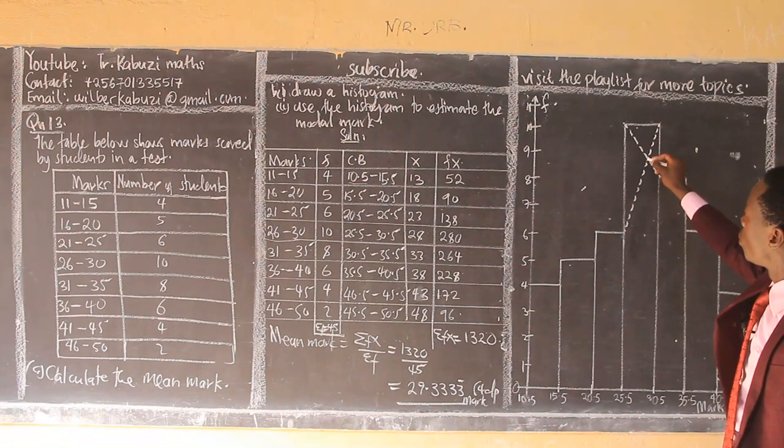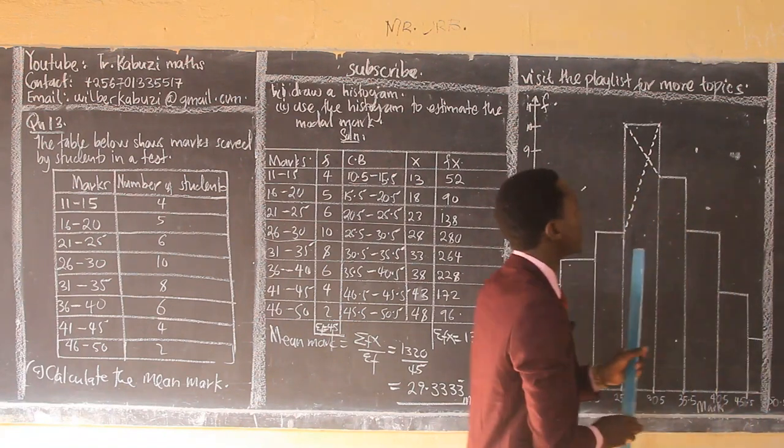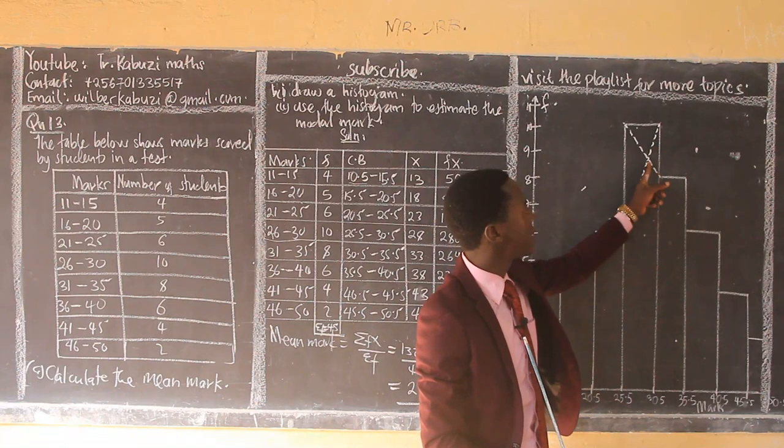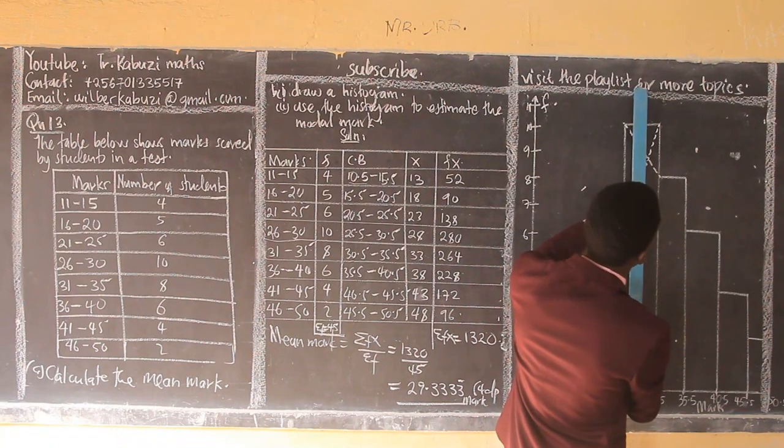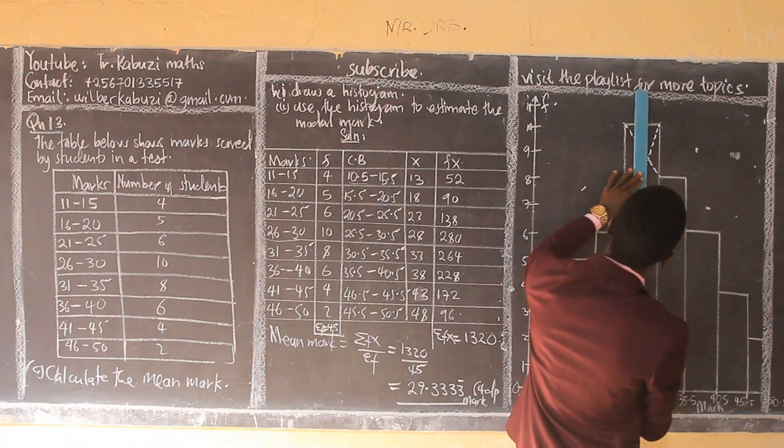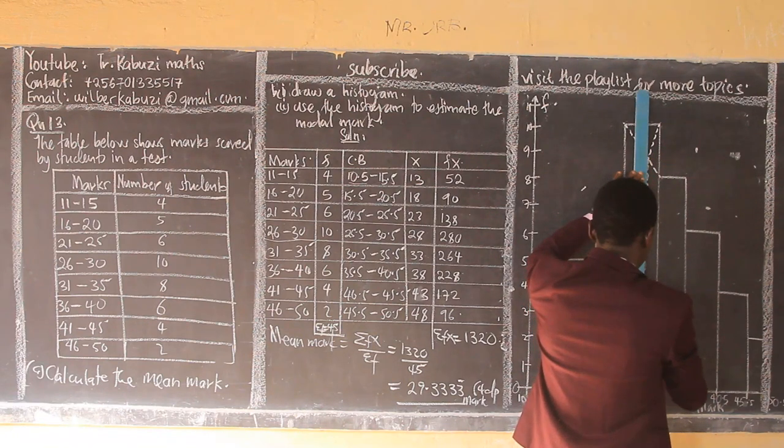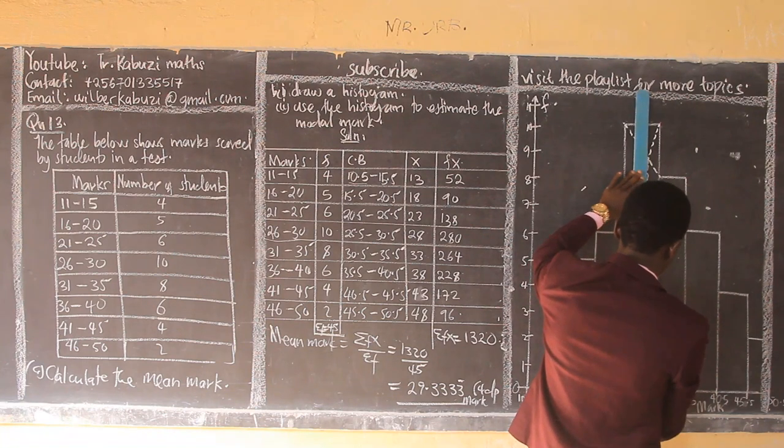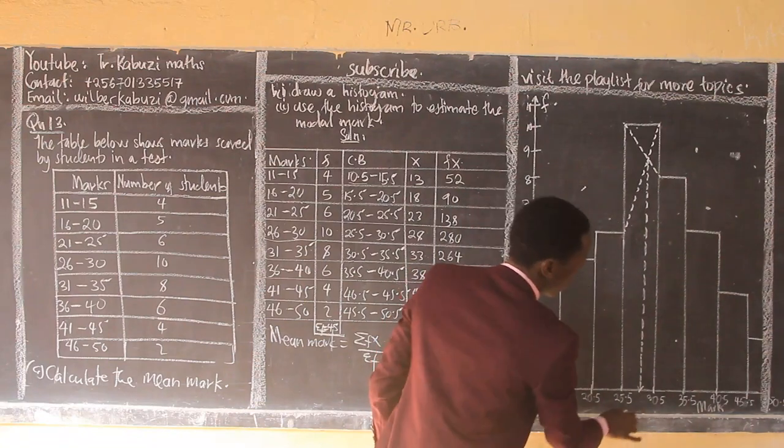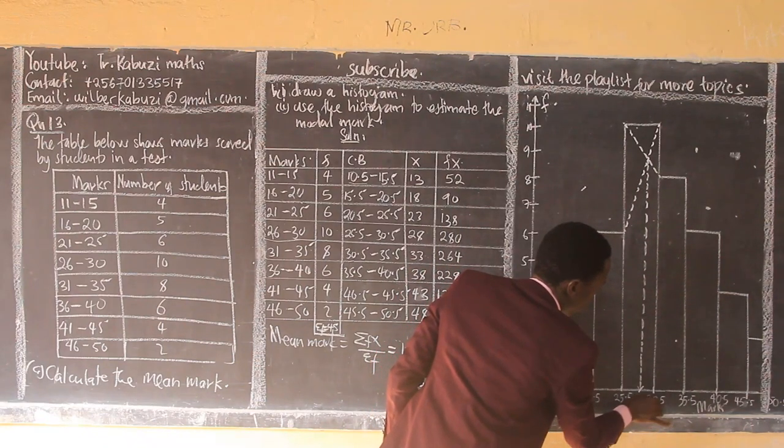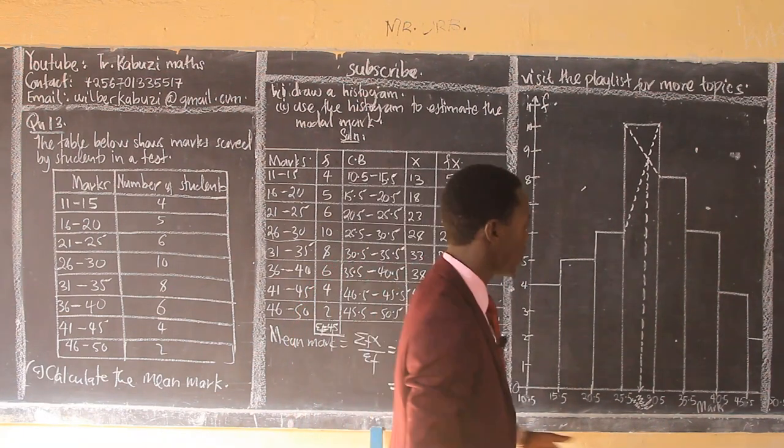Then that's what we have. So now to get our modal mark, you come now, you draw a line at the end. That's how we read our modal mark. So now where these two meet, you draw a line until when you come here down. So now I get mine. So that's how I'm going to get my modal mark. So now this one is going to give me my modal mark.